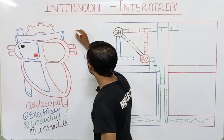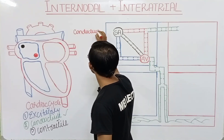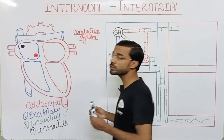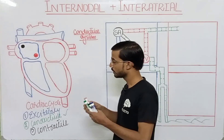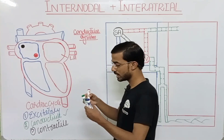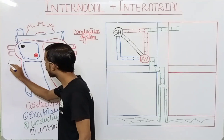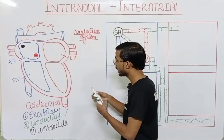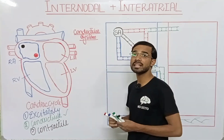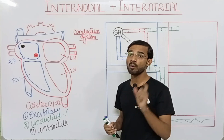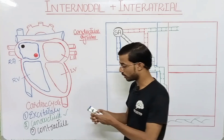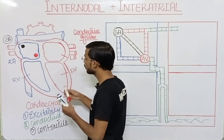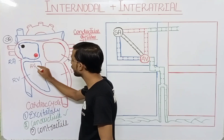We are going to discuss the conductive system of the heart. Here are basically the four chambers of the heart: the left atrium, the right atrium, the right ventricle, and the left ventricle. In the heart you will see two most important nodes: the SA node, or sinoatrial node, and the AV node, or atrioventricular node.